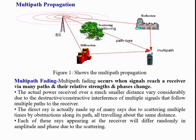Multipath fading occurs when a signal reaches a receiver via many paths and their relative strength and phases change. The actual power received over a much smaller distance varies considerably due to destructive or constructive interference of the multiple signals following multipath to the receiver. The direct ray is actually made of many rays due to multiple scatterings by obstructions; each ray appearing at the receiver will differ randomly in amplitude and phase.